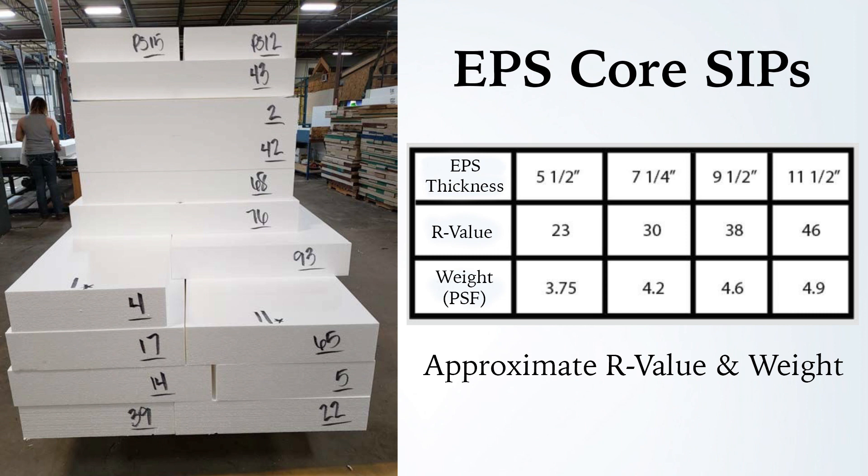But the R-value per dollar is about the same. So now you're talking about having a six-inch panel for a wall versus a four-inch panel of the spray foam variety. So why not go with that? Why not have a thinner wall?